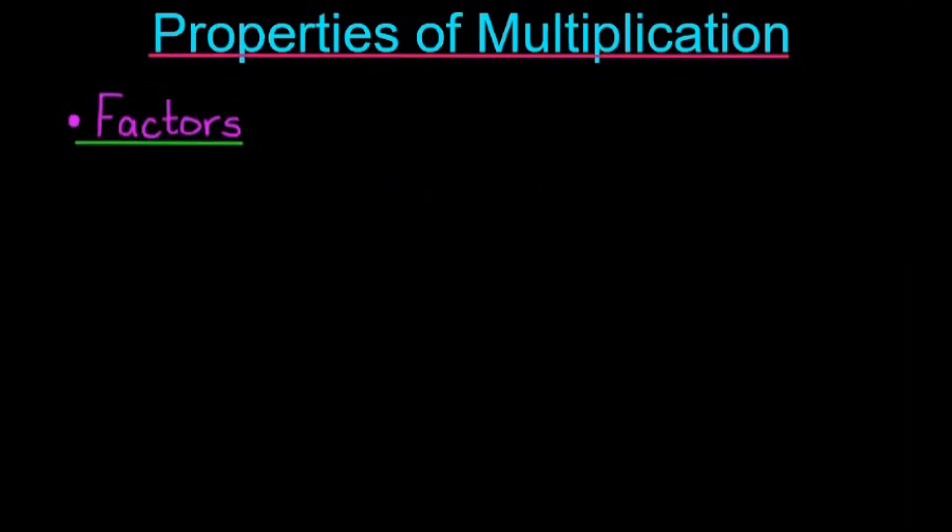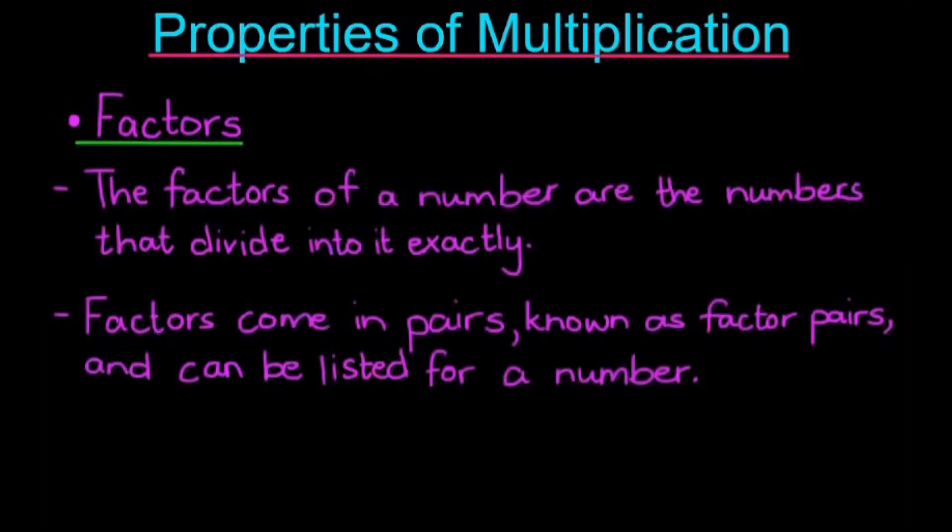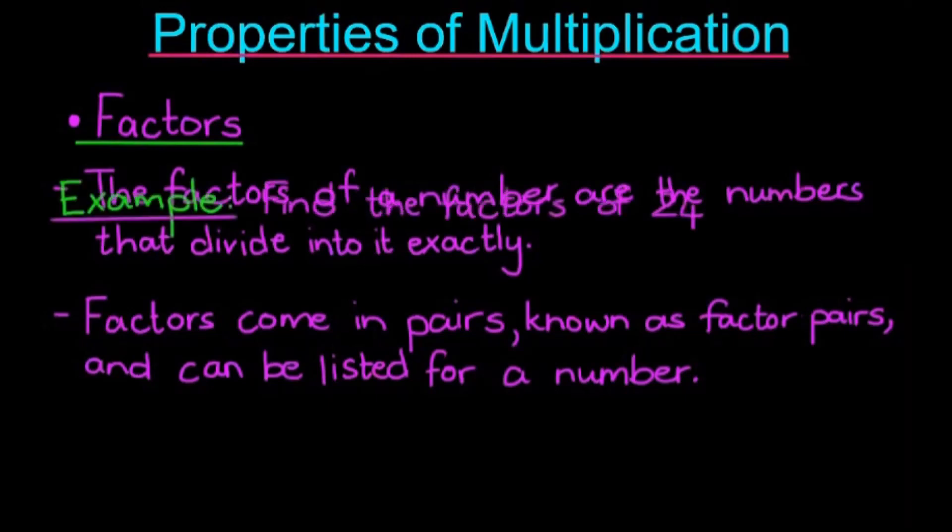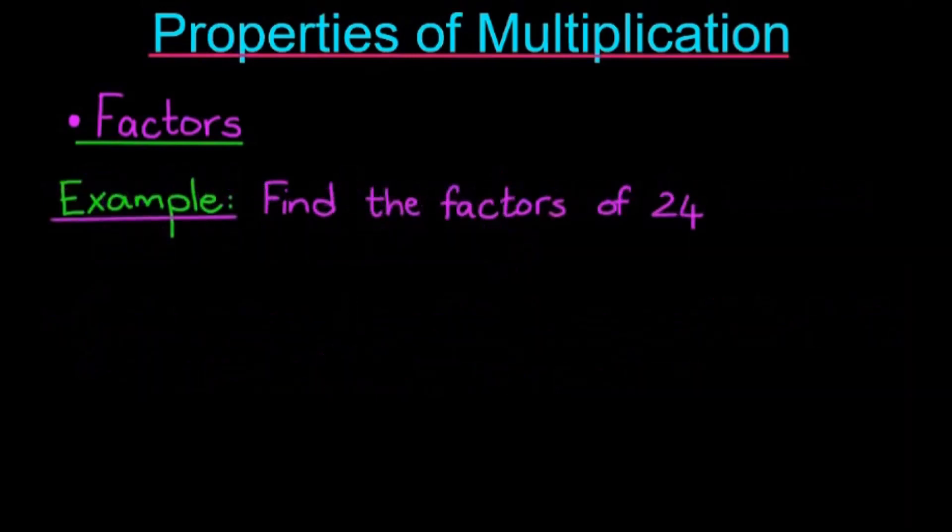When it comes to factors, the factors of a number are numbers that divide into it equally. Factors come in pairs known as factor pairs and can be listed for a number. So in our example, we need to find the factors of 24. You need to think of all the multiplication sums that will give you an answer of 24. For example, 1 times 24, 2 times 12, 3 times 8, 4 times 6.